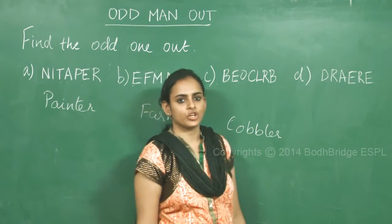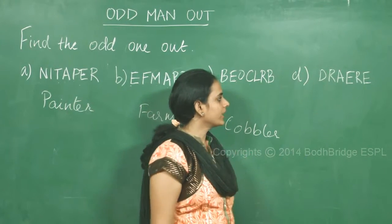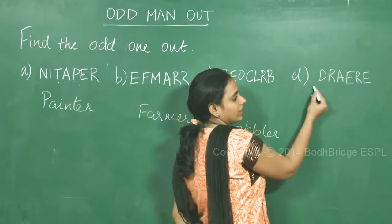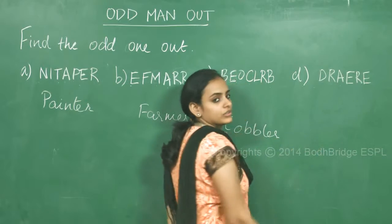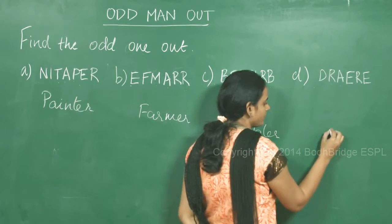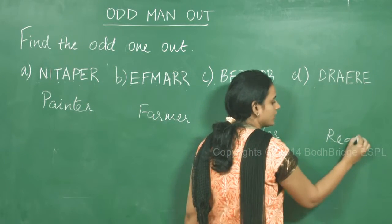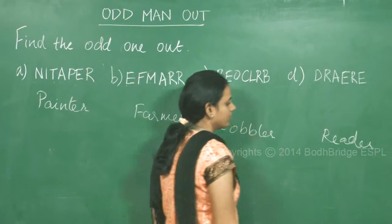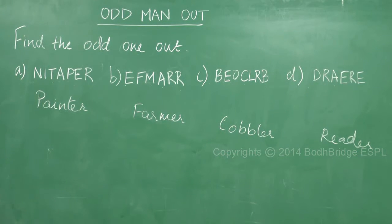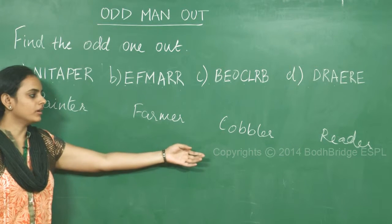And similarly, if we jumble option d, we get r e a d e r, which is reader. So option d is reader. So we have jumbled all the four options and we have got painter, farmer, cobbler, and reader.